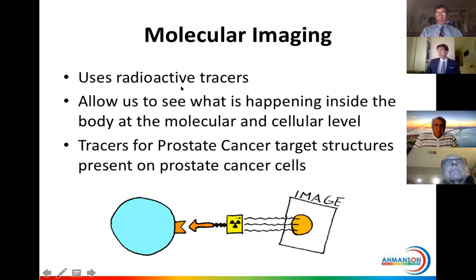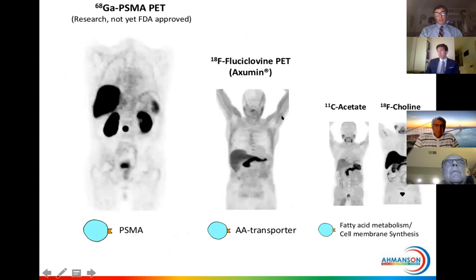When we do molecular imaging, we use radioactive tracers. Depending on what the tracers are made of, they allow us to see what is happening inside the body at the molecular and cellular level. Tracers that are specific for prostate cancer target structures that are present on the prostate cancer cells. This radioactive isotope emits photons, and these can be picked up by nuclear medicine cameras and used to create an image.